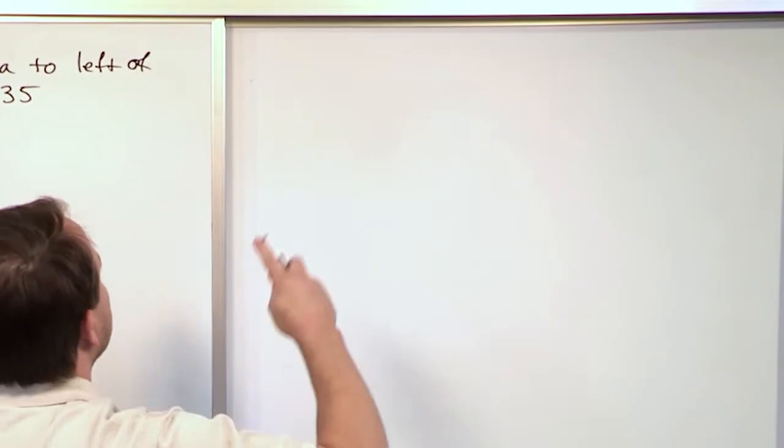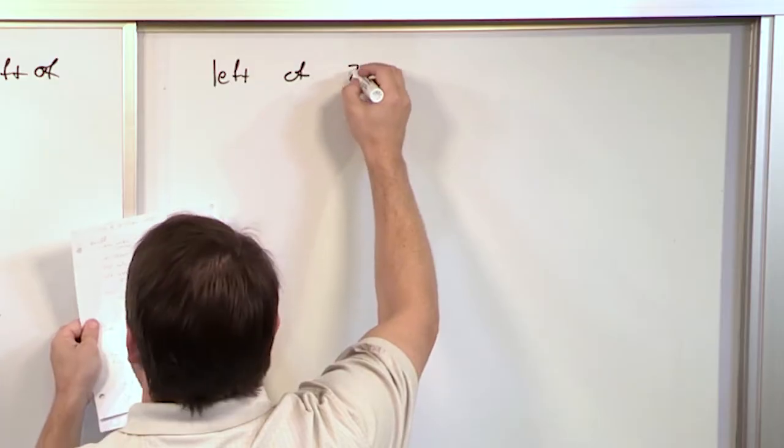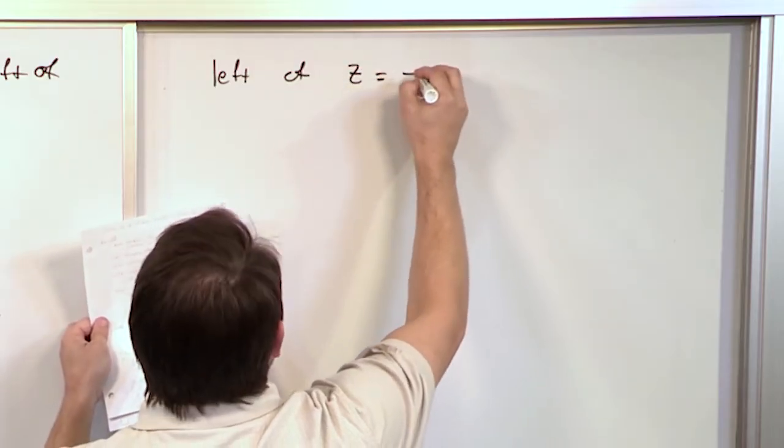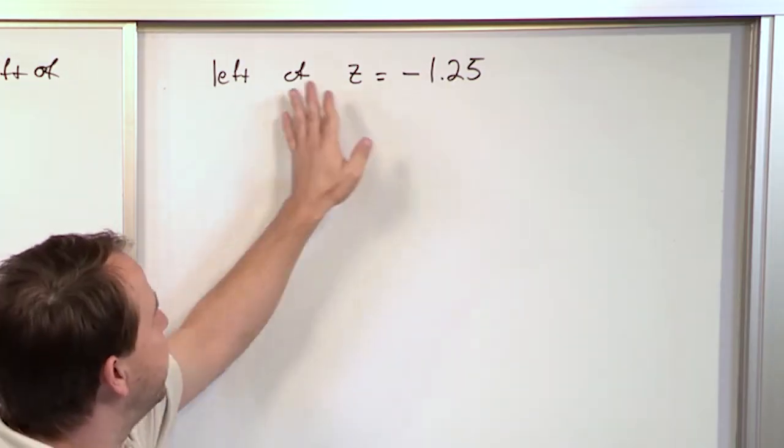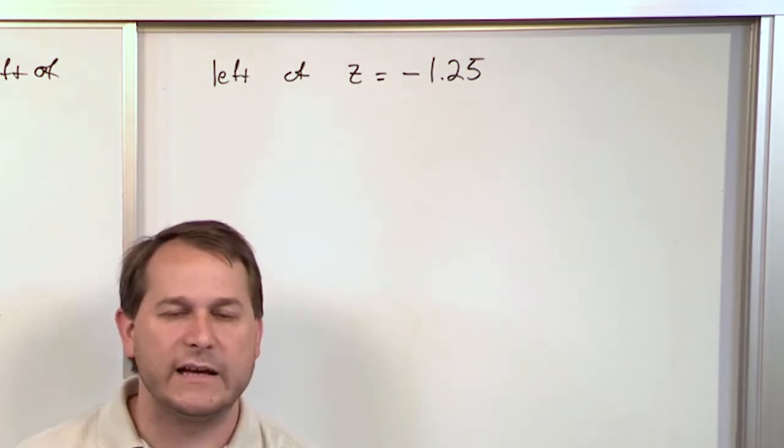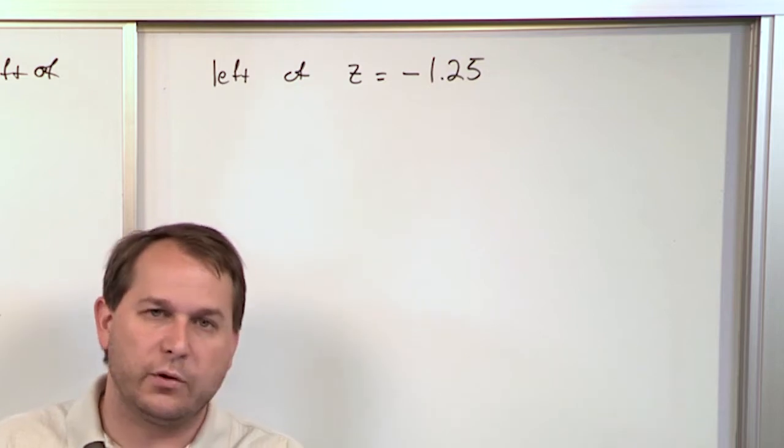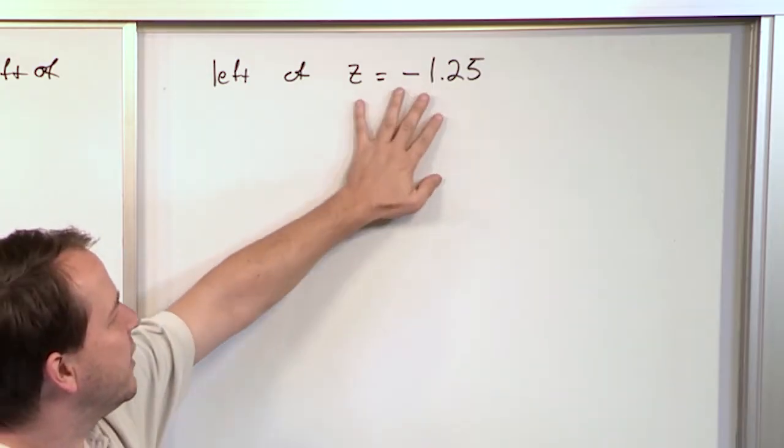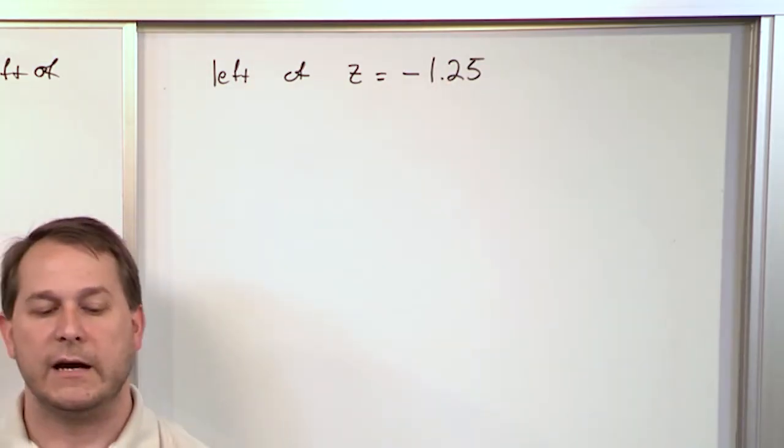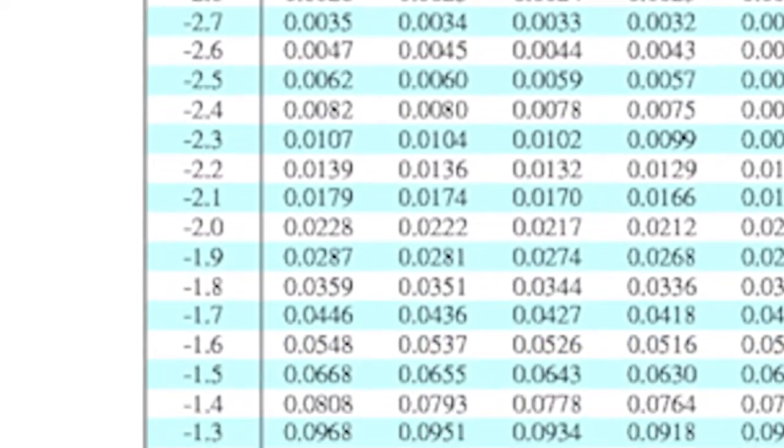Let's find the area to the left of z is equal to negative 1.25. All right. So again, all you have to do, since you're trying to find the area to the left, that is exactly what the chart is set up to give you, the area to the left of the z score. So all you have to do is look the z score up, read the number, and that's your answer in this case. We're just getting our feet wet with learning how to use this chart. So let's look a value of negative 1.25 up in our chart. So we go over here and we know it's negative. So we're going to look on the left-hand side for the z score that's negative 1.25.